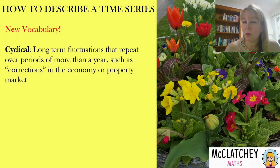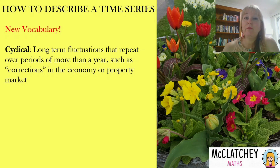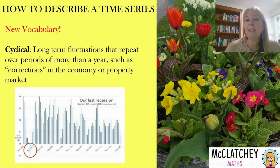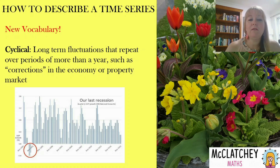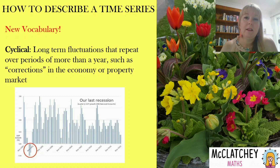Something to be aware of is that you also have something called cycles. It's a little bit like a season but occurs over a longer timeframe — these are long-term fluctuations that occur over periods of more than a year, such as corrections in the economy or in the property market. Typically, the property market will go through 10 years of growth, then have a correction where prices fall back, then go through its next period of growth. Similarly, the economy goes up for a long period and then drops back in a recession.